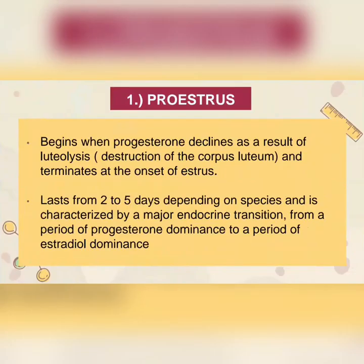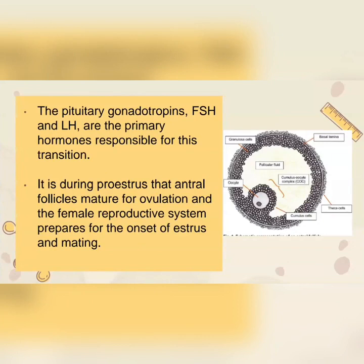What is proestrus? Proestrus begins when progesterone declines as a result of luteolysis, or the destruction of the corpus luteum, and terminates at the onset of estrus. It usually lasts from two to five days depending on species and is characterized by a major endocrine transition from a period of progesterone dominance to a period of estradiol dominance. The pituitary gonadotropins — FSH, or follicle stimulating hormone, and LH, the luteinizing hormone — are the primary hormones responsible for this transition. It is during proestrus that antral follicles mature for ovulation and the female reproductive system prepares for the onset of estrus and mating.